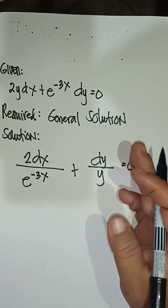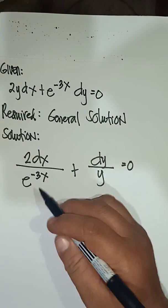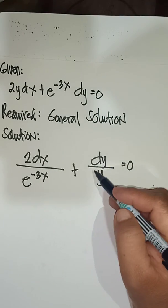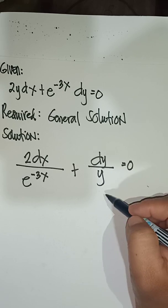You group all x and all y. So, 2dx over e^(-3x) plus dy over y.